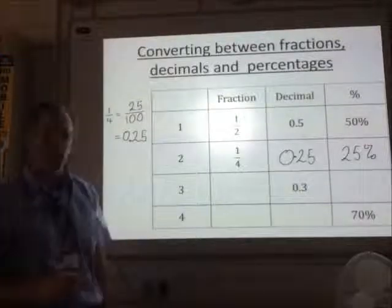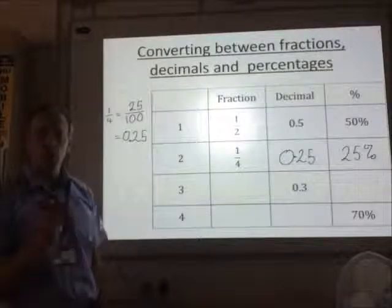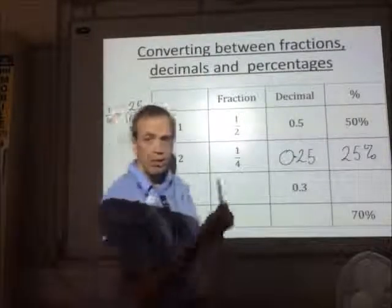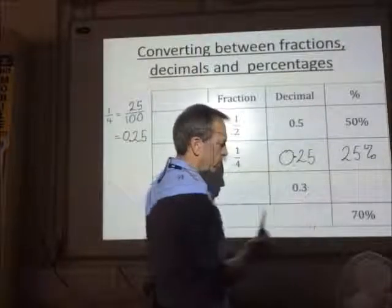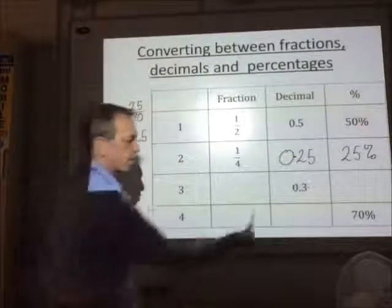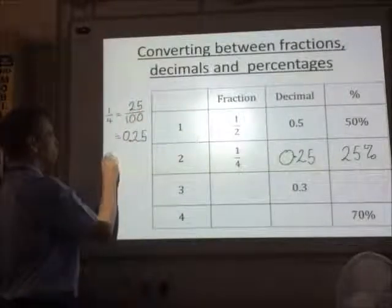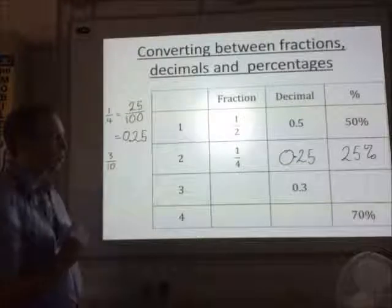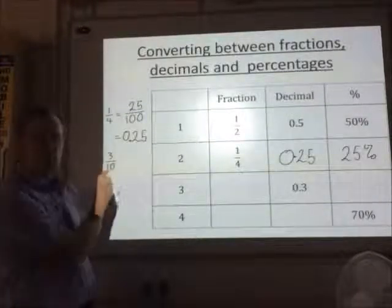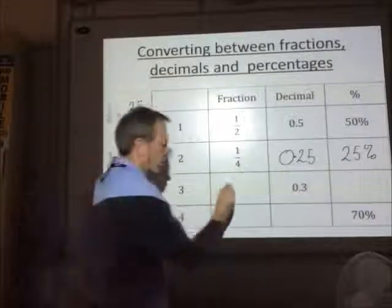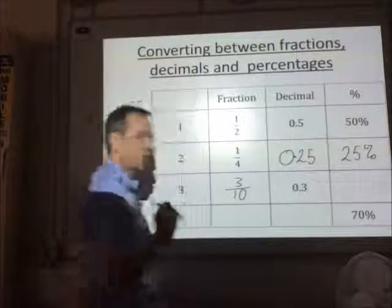Let's have a look at row 3. This time we're given a decimal to start with. So what I'm going to do is write that decimal. Thinking about place value, I've got 0.3. So that 3 is in the tenths column. So I've got 3 tenths. So that is a fraction there, and actually that fraction is already in its simplest form. So I can write that as 3 tenths.